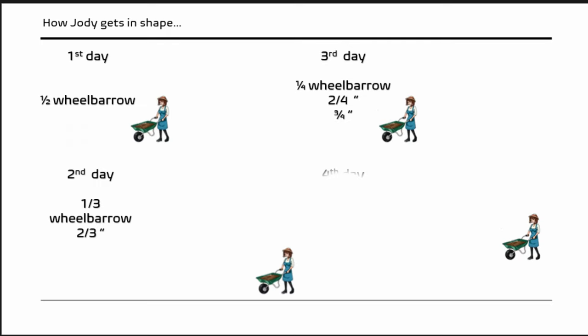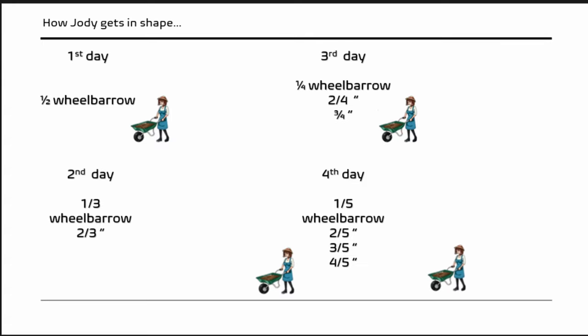On the fourth day: a fifth of a wheelbarrow, two-fifths, three-fifths, four-fifths — and this one goes fast. She did this for 47 days.